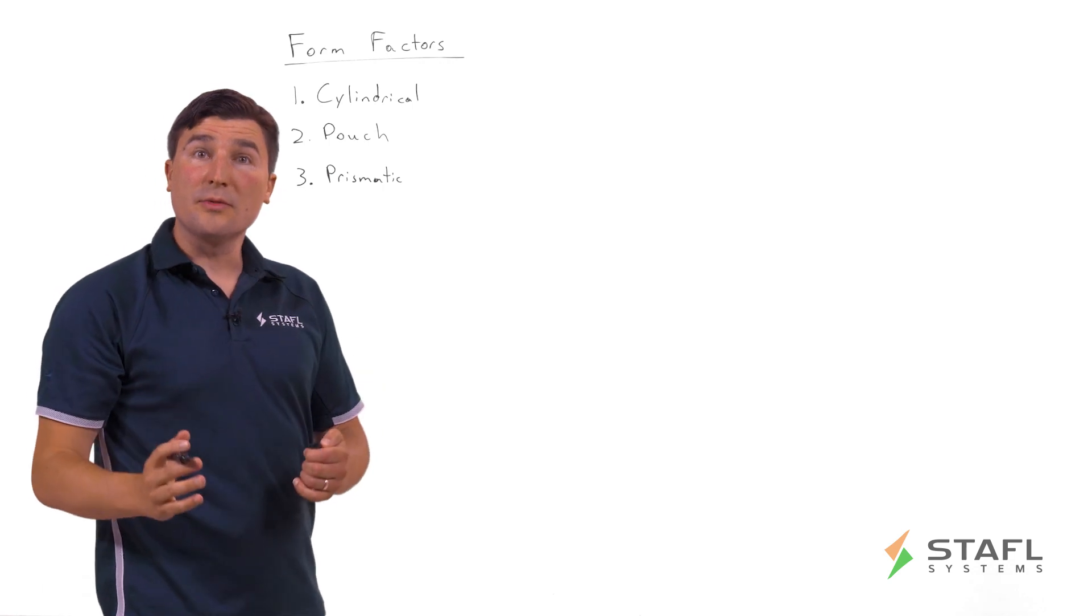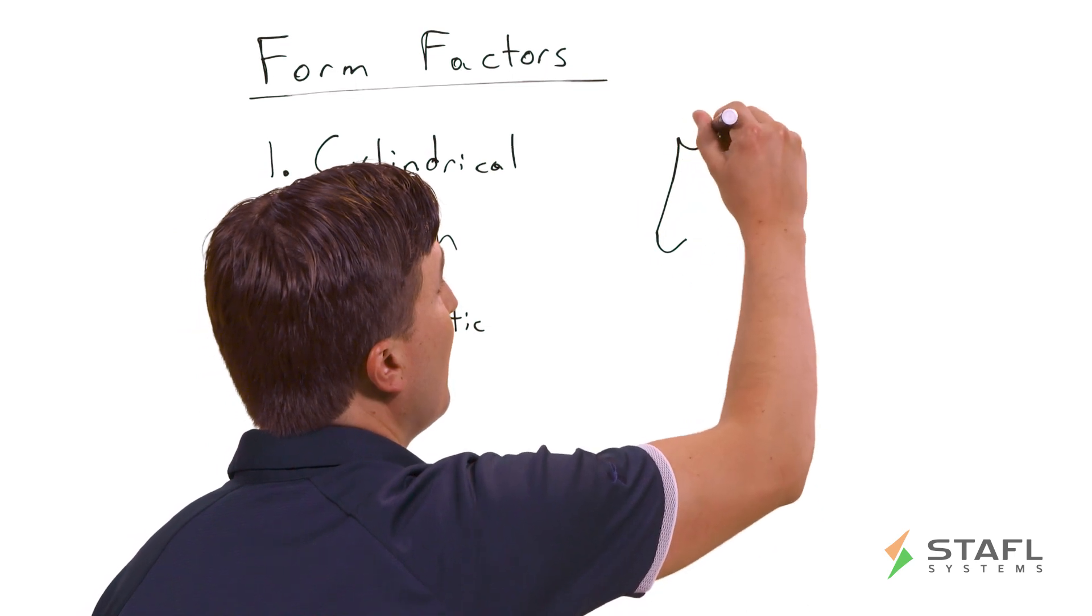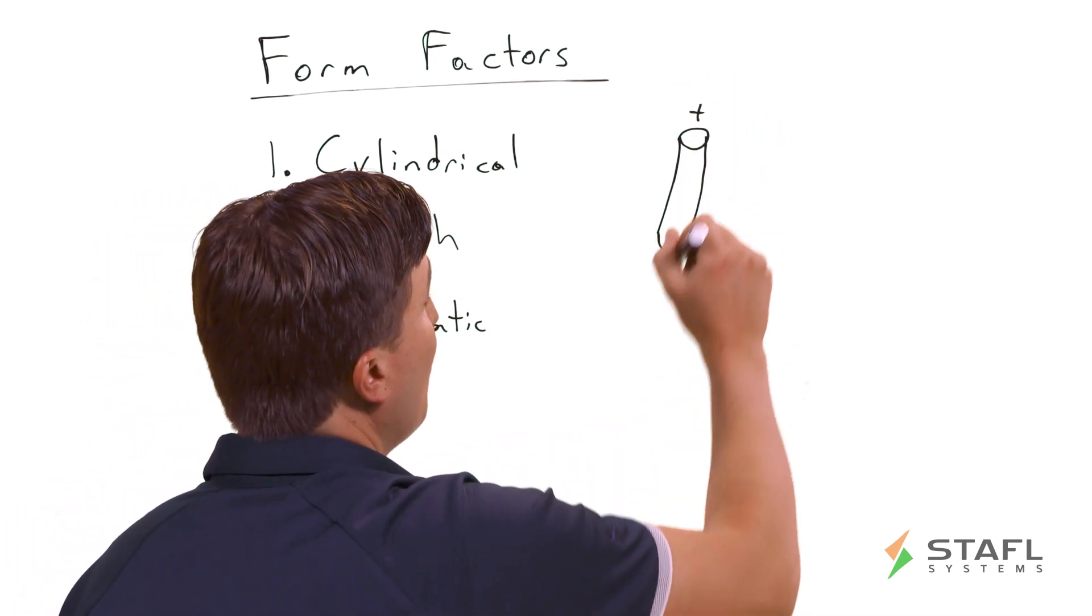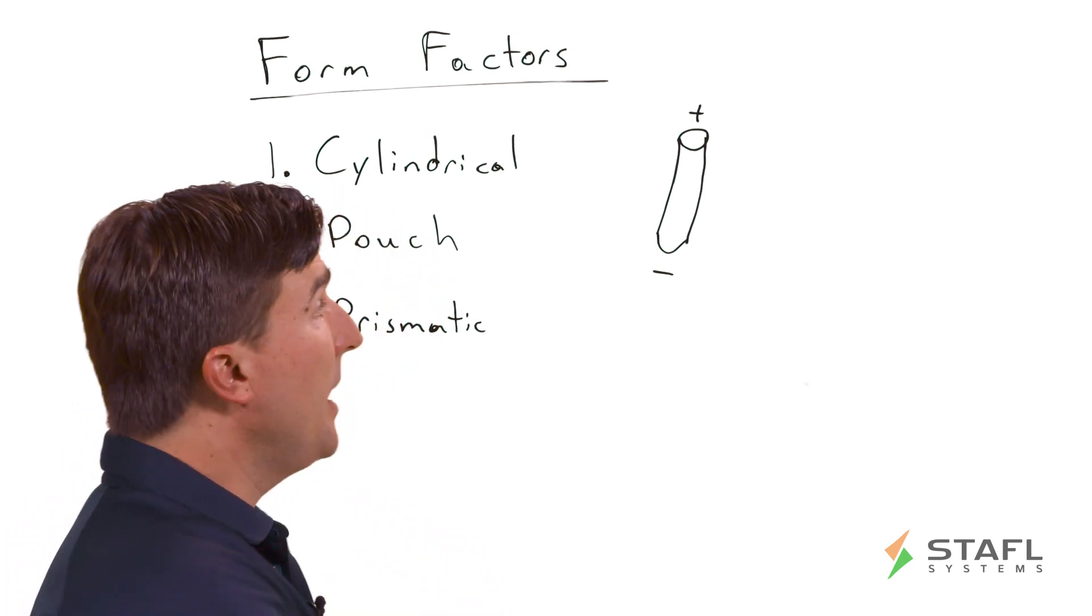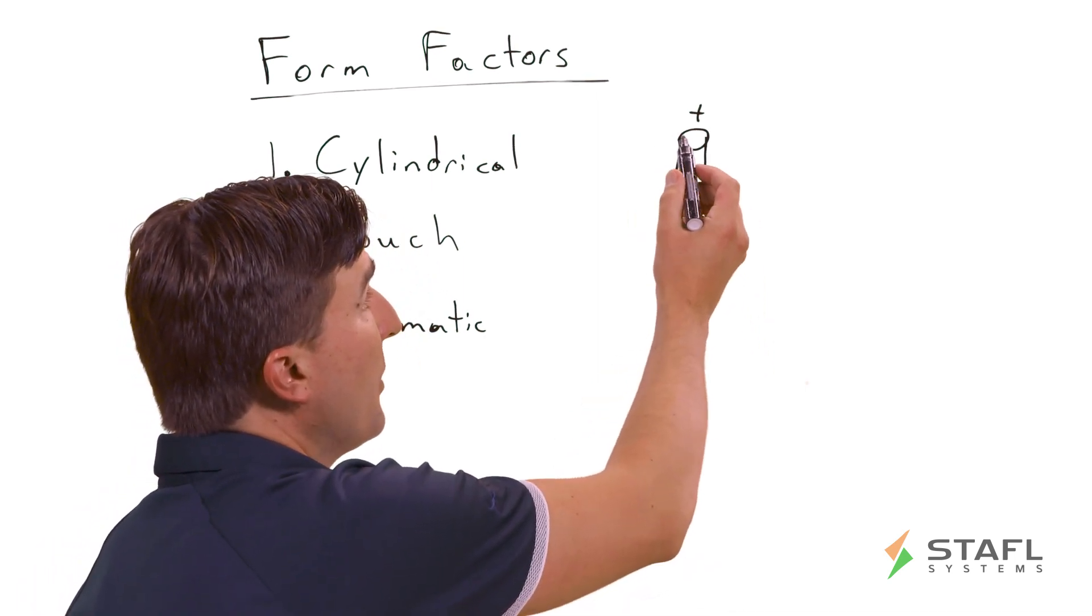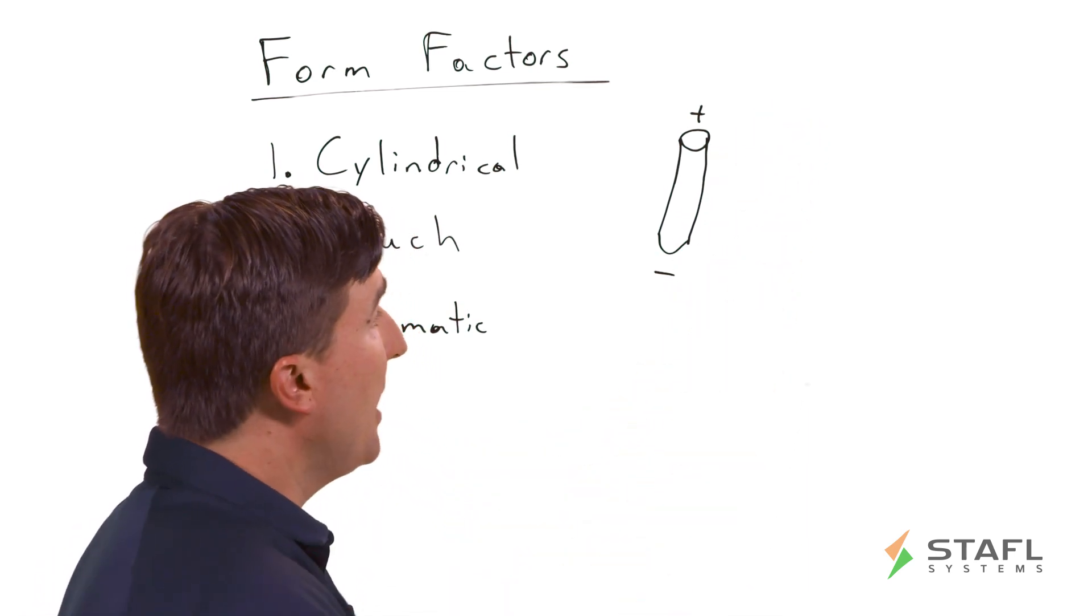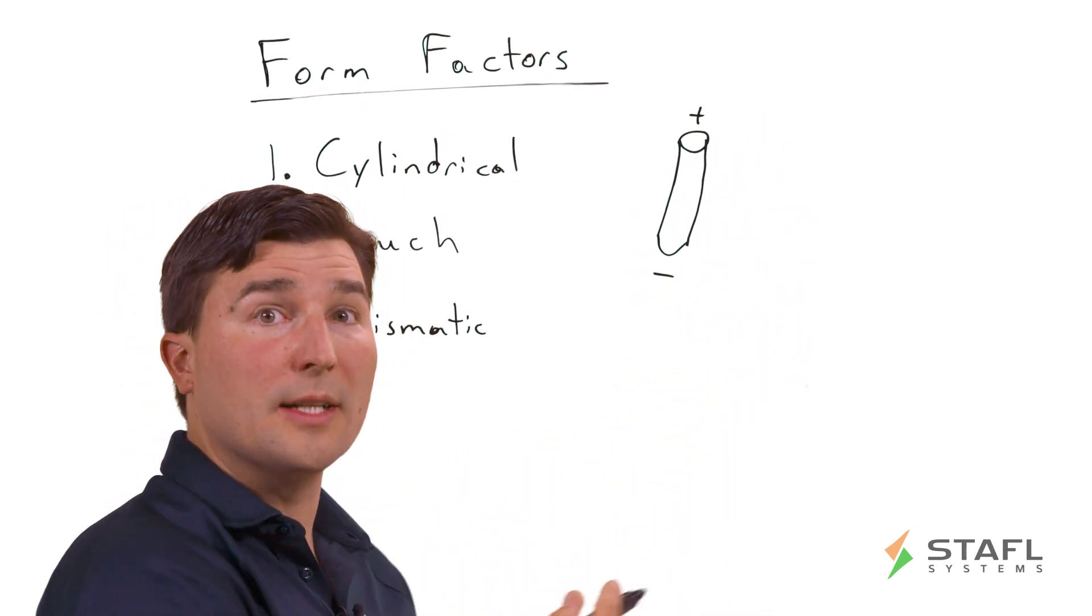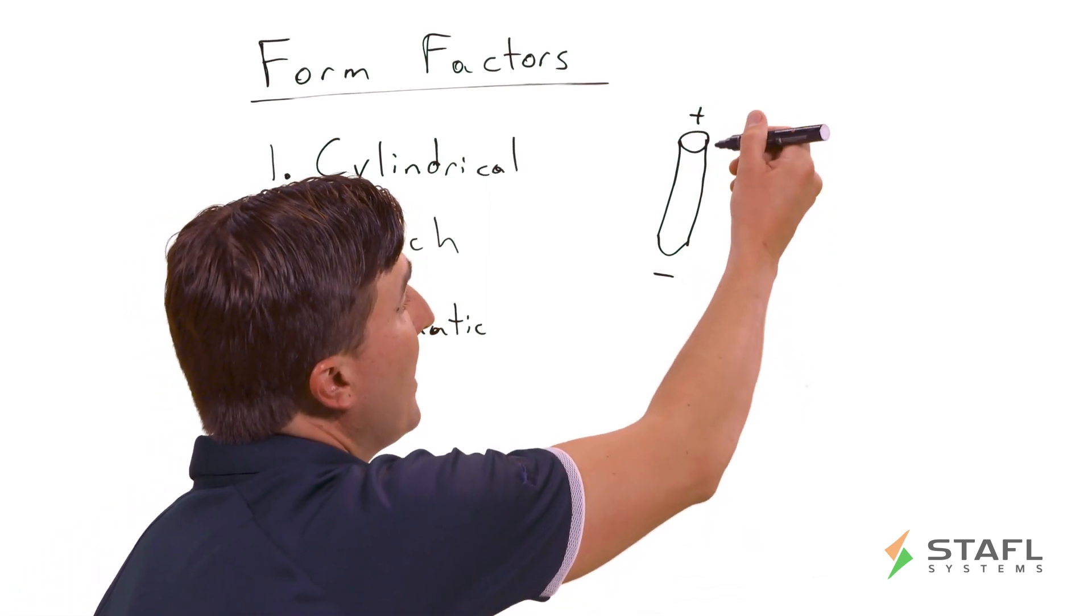Let's talk about each one of these form factors in a little more detail. The cylindrical cell, as its name suggests, is typically a tall cylinder with a positive terminal on one side and a negative terminal on the other. Some form factors you may have heard of before are the 18650 or the 21700. In this case, the 18 refers to the diameter and the 650 refers to the length. So, for example, an 18650 cell is 18 millimeters in diameter and 65 millimeters in length, whereas the 21700 is 21 millimeters in diameter and 70 millimeters in length.